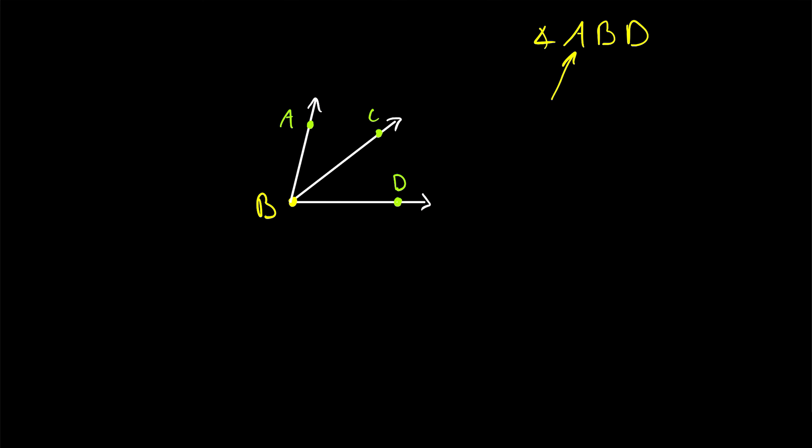The order of the other two letters, the points on the rays, which are called the sides of the angle, that doesn't matter. So this angle is the same as angle D, B, A. Again, the order of the points on the rays does not matter. What's important is that the vertex goes in the middle.